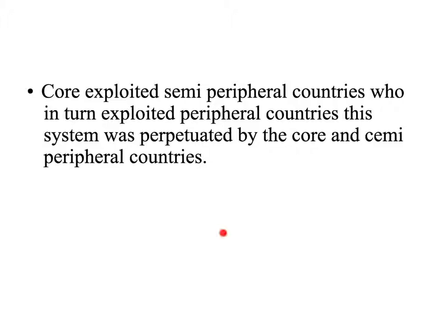The core countries exploited semi-peripheral countries — meaning they just took advantage of them. Then the semi-peripheral countries in turn exploited peripheral countries. Semi-peripheral countries are those that aren't quite peripheral but aren't core countries either. This system kept going and going and is perpetuated even today, because countries wanted to stay in charge and maintain their power. People kept exploiting other countries, which kept peripheral and semi-peripheral countries from developing very well.